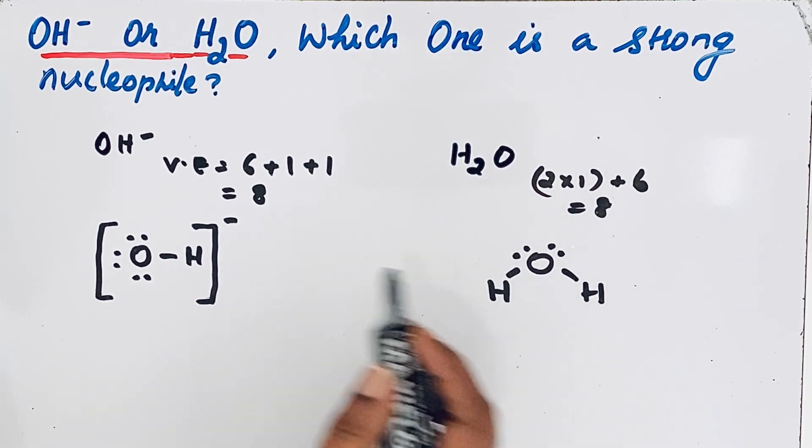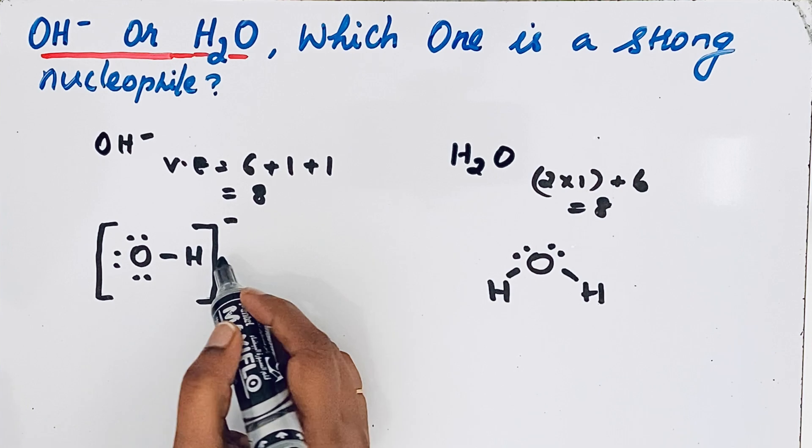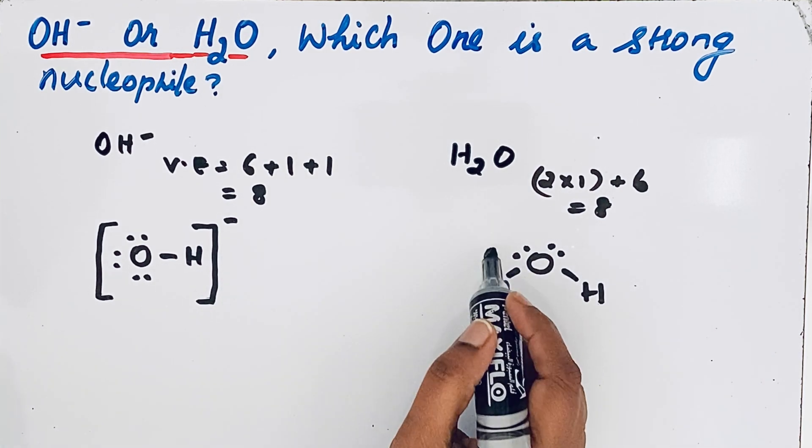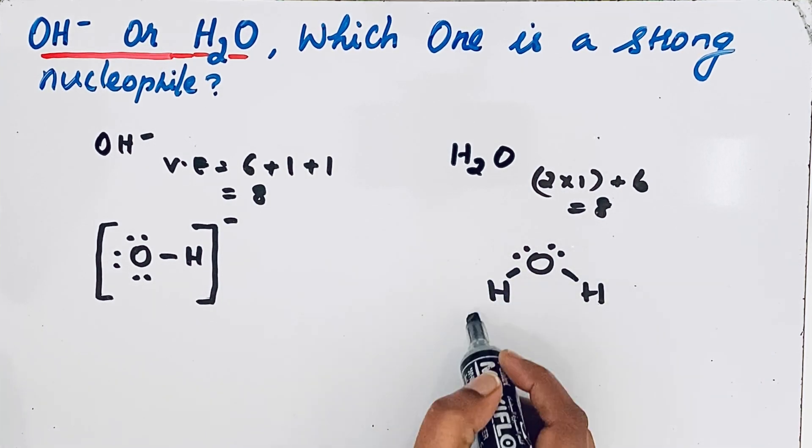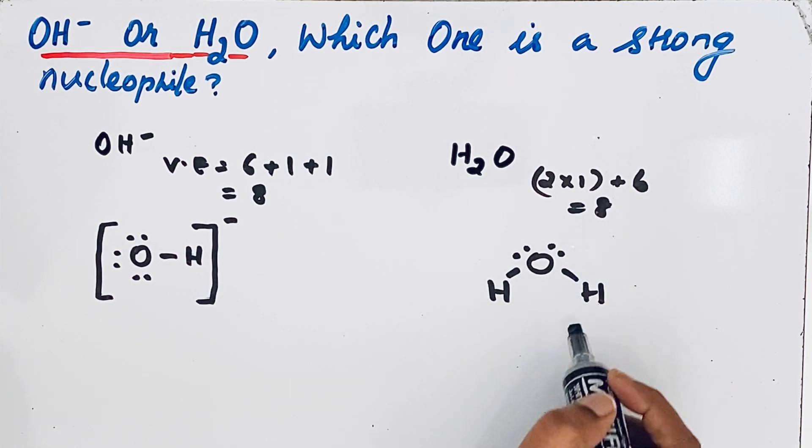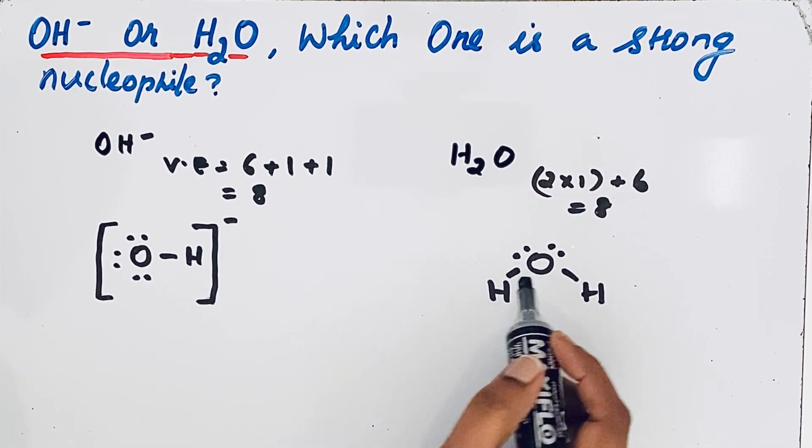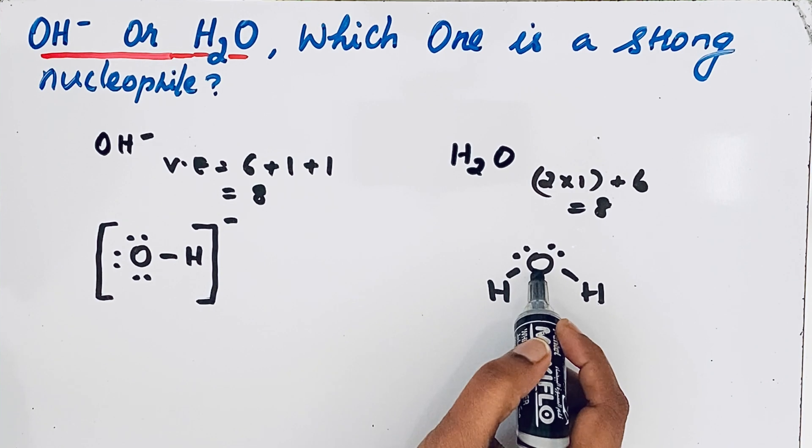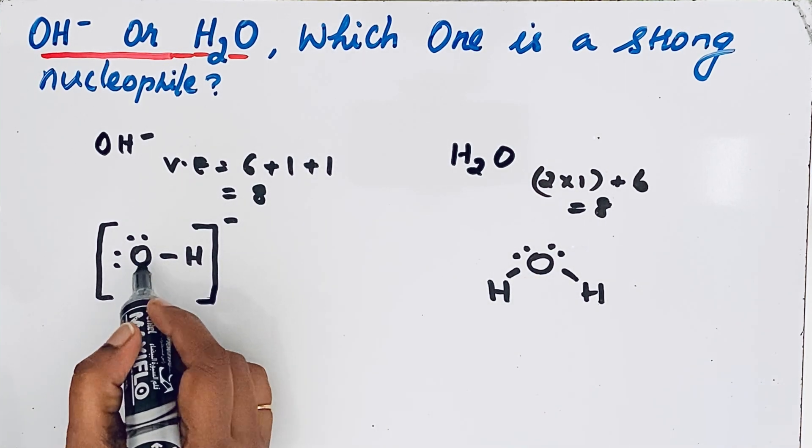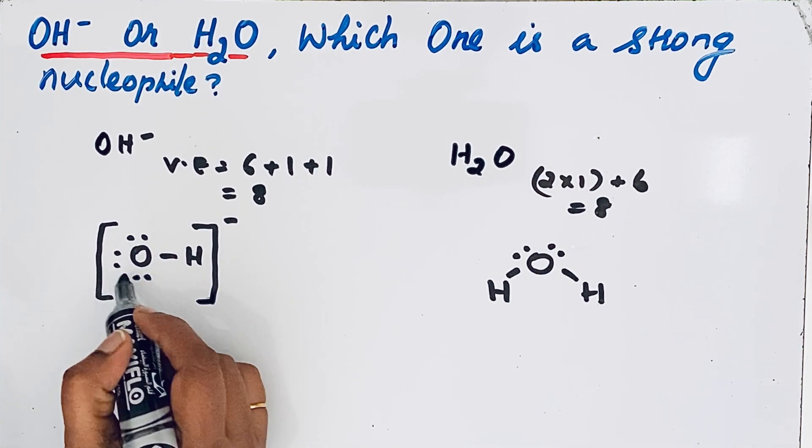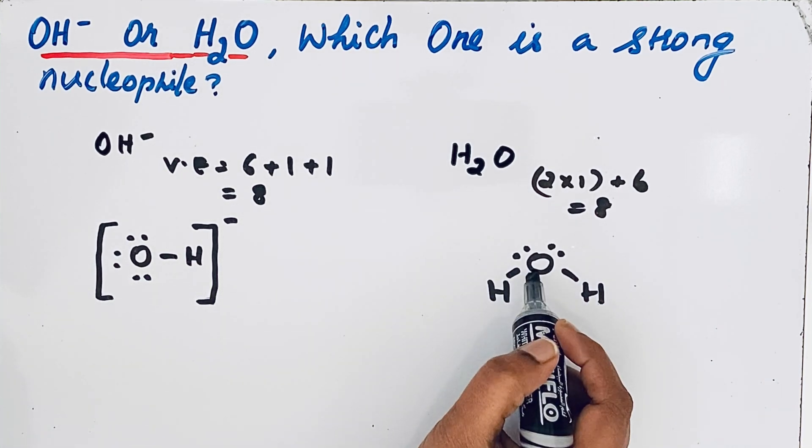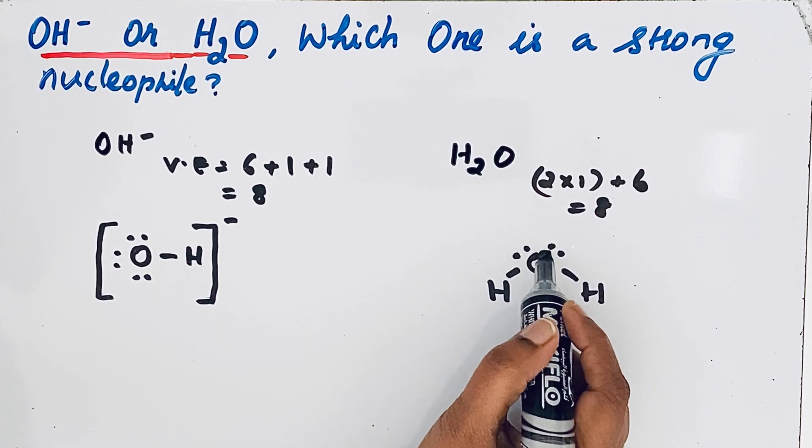Now let us compare this Lewis structure of OH- ion with H2O. H2O is a neutral molecule, so we don't draw any bracket here. Here we have an oxygen atom and here also we have an oxygen atom. If you see here, this oxygen contains 3 lone pair electrons, but here only 2 lone pair electrons are present.